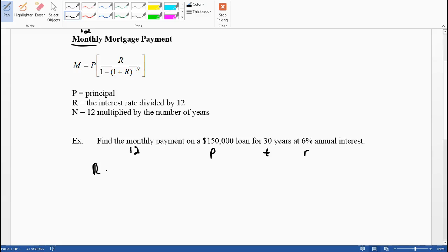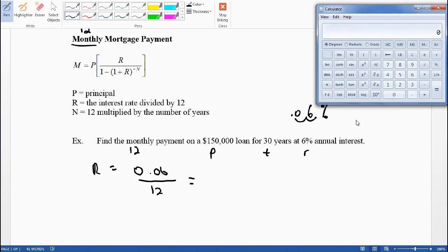Big R is the interest rate divided by 12. I'm going to take that 6% and convert it to a decimal. 6% - the decimal is on the end, so we move it two places to the left, which makes it 0.06. I'll take 0.06 divided by 12 to find the periodic interest rate. 0.06 divided by 12 equals 0.005.